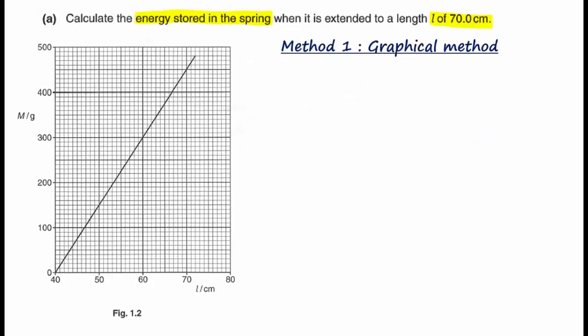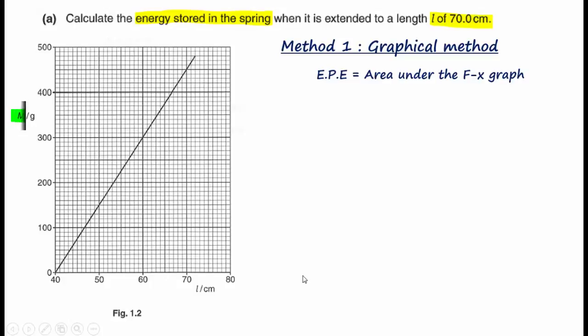Let us look at the first method of solving elastic potential energy. We know that elastic potential energy is the area under a force versus extension graph. However, when we look at the graph given in Figure 1.2, we see that this is a graph of m versus L. Hence, we need to first link this graph to an F versus x graph before we can solve the question.